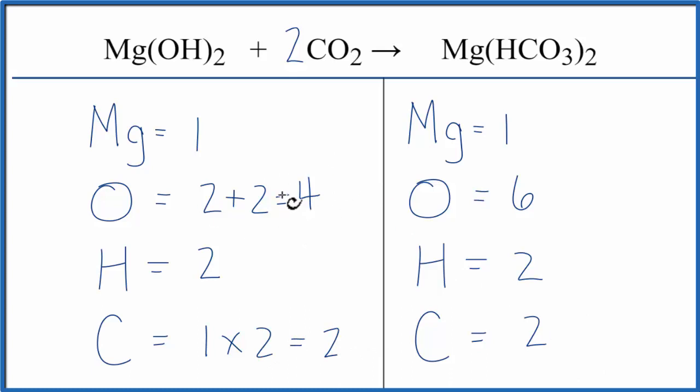Now let's update our oxygens. So we have the 2 times the 1, that's 2, plus 2 times 2, that's 4. And that gives us 6. So now the oxygens are balanced, and everything else is balanced as well.